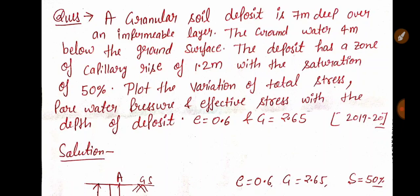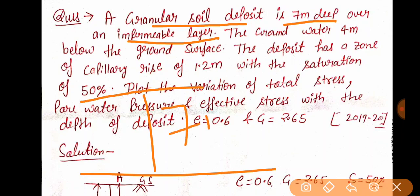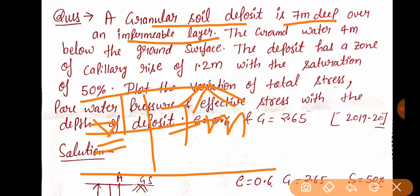Let's start with this question. The language of the question is: the granular soil deposit is 7 meters deep over an impermeable layer. So what is it? This one is called the impermeable layer, and 7 meters of your layer is granular soil. And the ground water is 4 meters below the ground surface. This one is the ground surface, this is the 4 meters, and here is our water table.